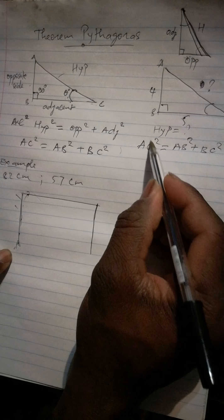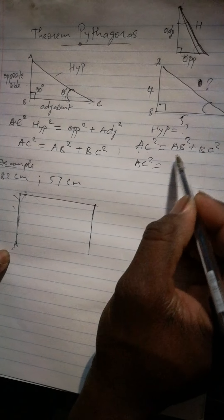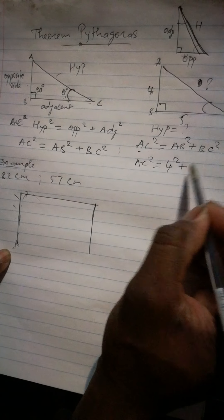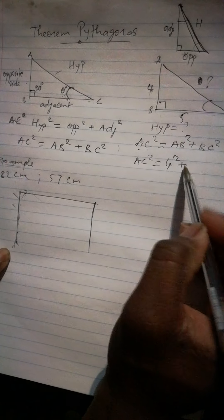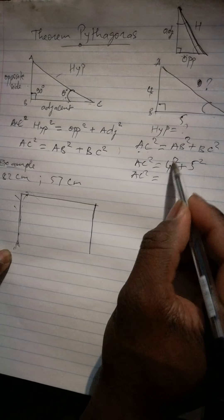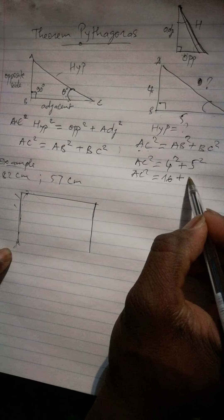And now, our hypotenuse is AC square equal to AB square plus BC square. We are looking, our unknown is AC square. So AC square equal to our AB is 4. So it's 4 square plus BC is 5, 5 square.